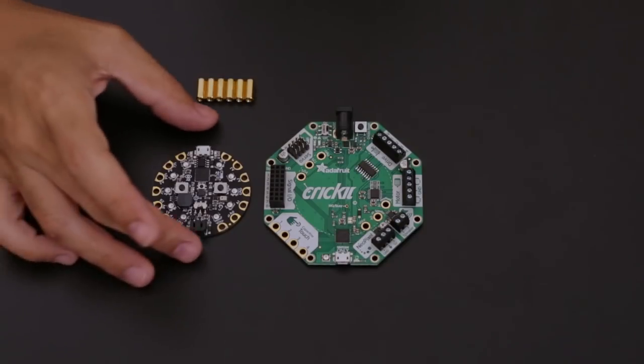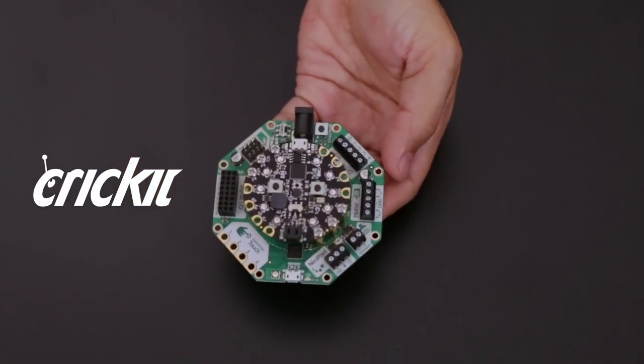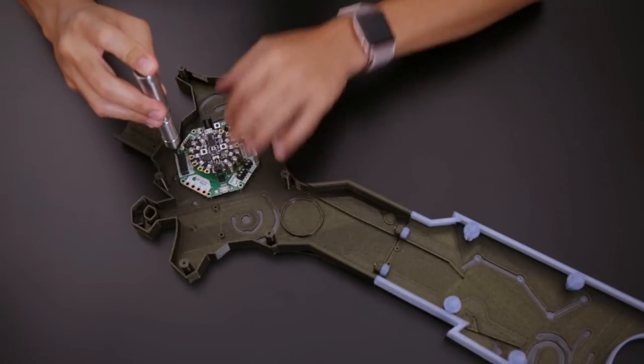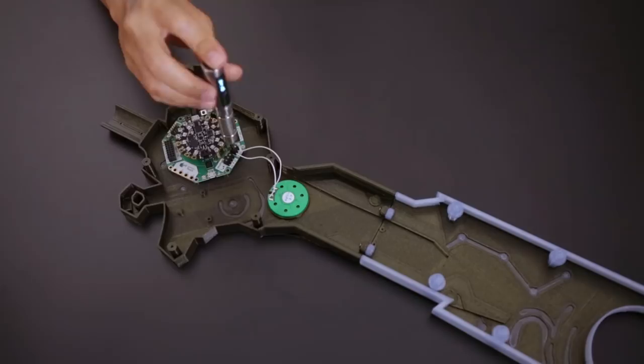The Adafruit Cricket for the Circuit Playground Express is a fully loaded robotics platform that will drive all the components. The PCB is secured to the built in standoffs near the center of the blade saw. A speaker can be press fitted into the holder.